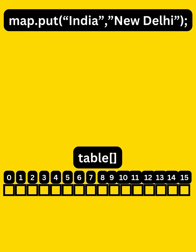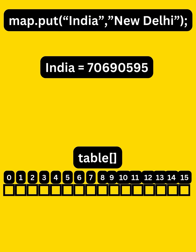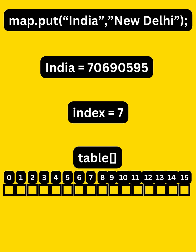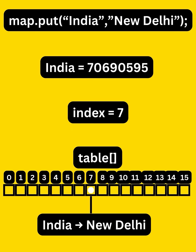Now when we write map.put India, New Delhi, it will first find the hash value for the key, that is India. Then it performs some internal calculation to map the hash value to an index, and hence it stores the key-value pair in the bucket.